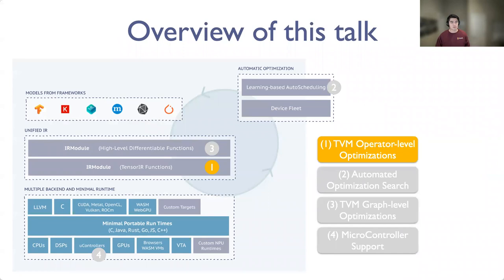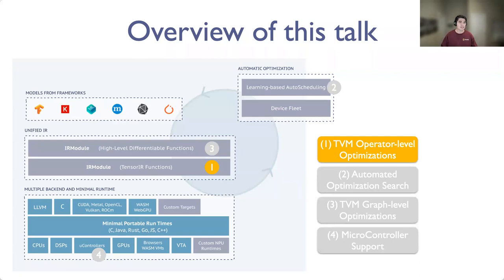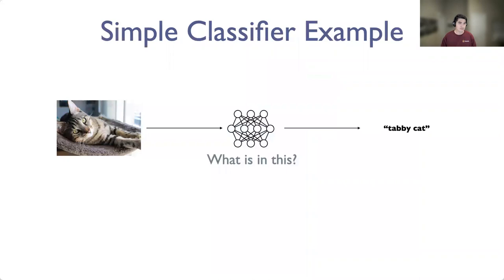My talk will touch on four points: operator-level optimizations, how TVM automates the optimization process, graph-level optimizations, and microcontroller plus hardware accelerator support. I want everyone to understand what can you use TVM for and how does TVM work — what lies under the hood that enables all this goodness in the TVM stack. I'll cover optimizations at two different levels of abstraction: the operator level and the full graph level.